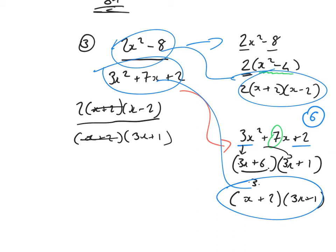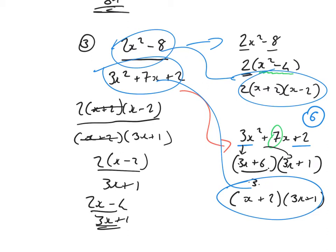The (x plus 2) terms cancel, giving 2 bracket x minus 2 over 3x plus 1, which expands to 2x minus 4 over 3x plus 1. Final answer.